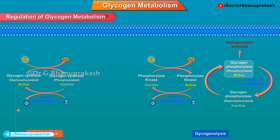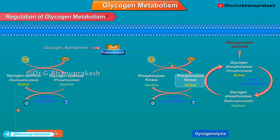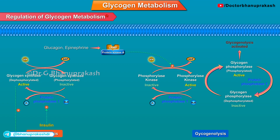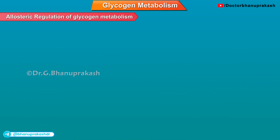Glycogen synthesis is active in the dephosphorylated state and glycogen phosphorylase is active in the phosphorylated state. Glucagon and epinephrine favor glycogenolysis by phosphorylating glycogen phosphorylase, whereas insulin favors glycogen synthesis by dephosphorylating glycogen synthase. Phosphorylase A is the active state, whereas phosphorylase B is the inactive state. The enzyme common to both glycogenesis and glycogenolysis is phosphoglucomutase.